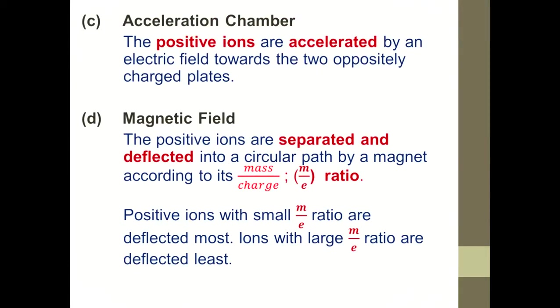It will be accelerated at the acceleration chamber, and at magnetic field, the speeding positive ions are going to be separated and deflected according to their mass over charge ratio. The positive ion with small mass over charge ratio are going to be deflected the most, but the ions with large mass over charge ratio are going to be deflected least. So the heavier the positive ions are, the more difficult it is to be deflected.